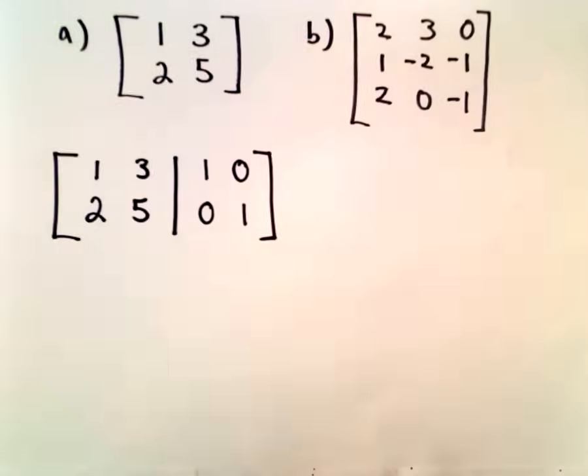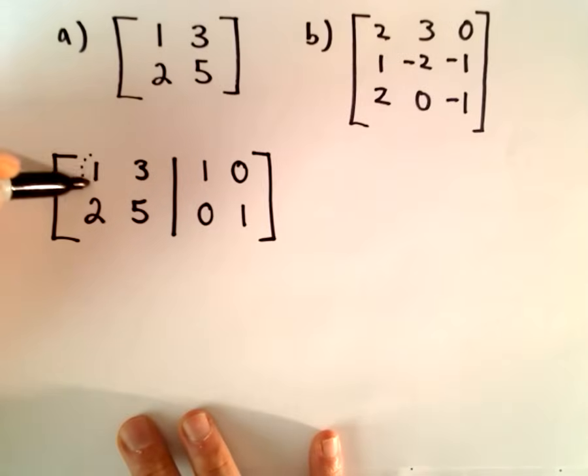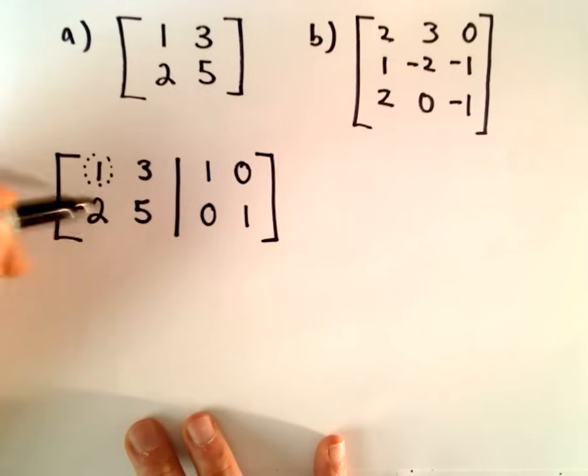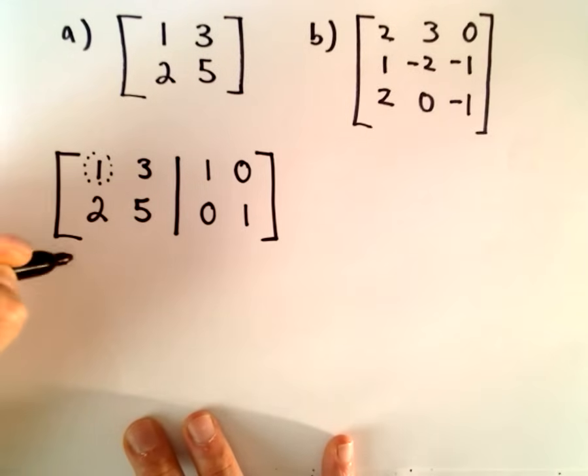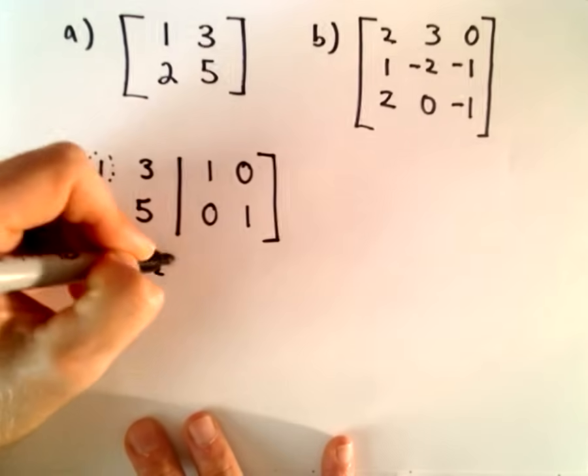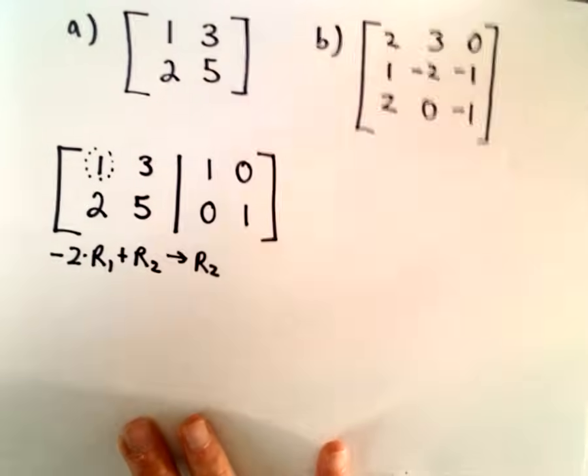Well, I've already got the 1 in the top left entry, which I want to have. So, I'm going to get a 0 below it. So, to do that, I'm going to take negative 2 times the first row, add that to my second row, and that's going to become my new row 2.